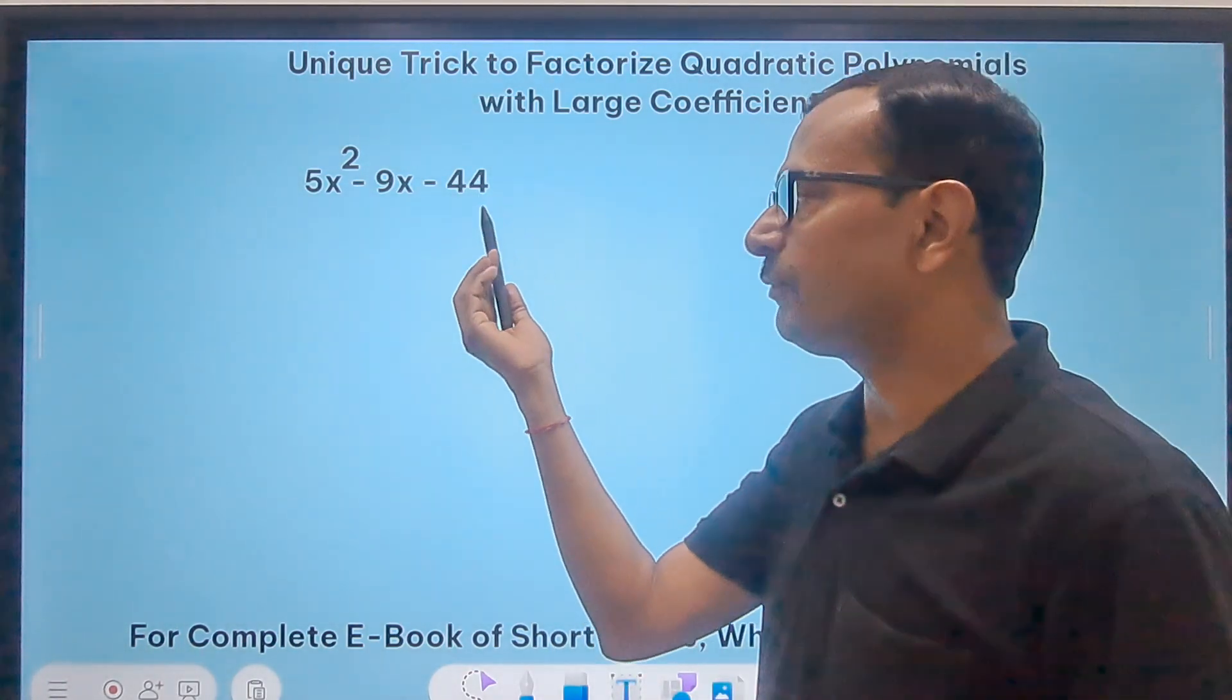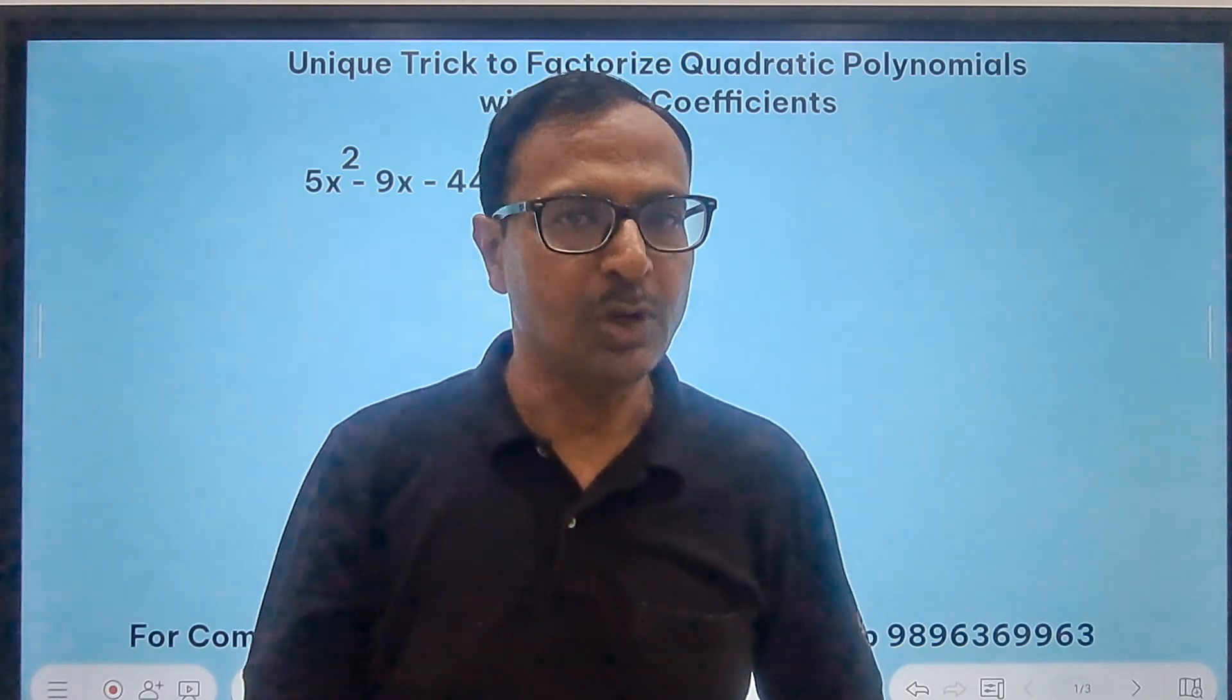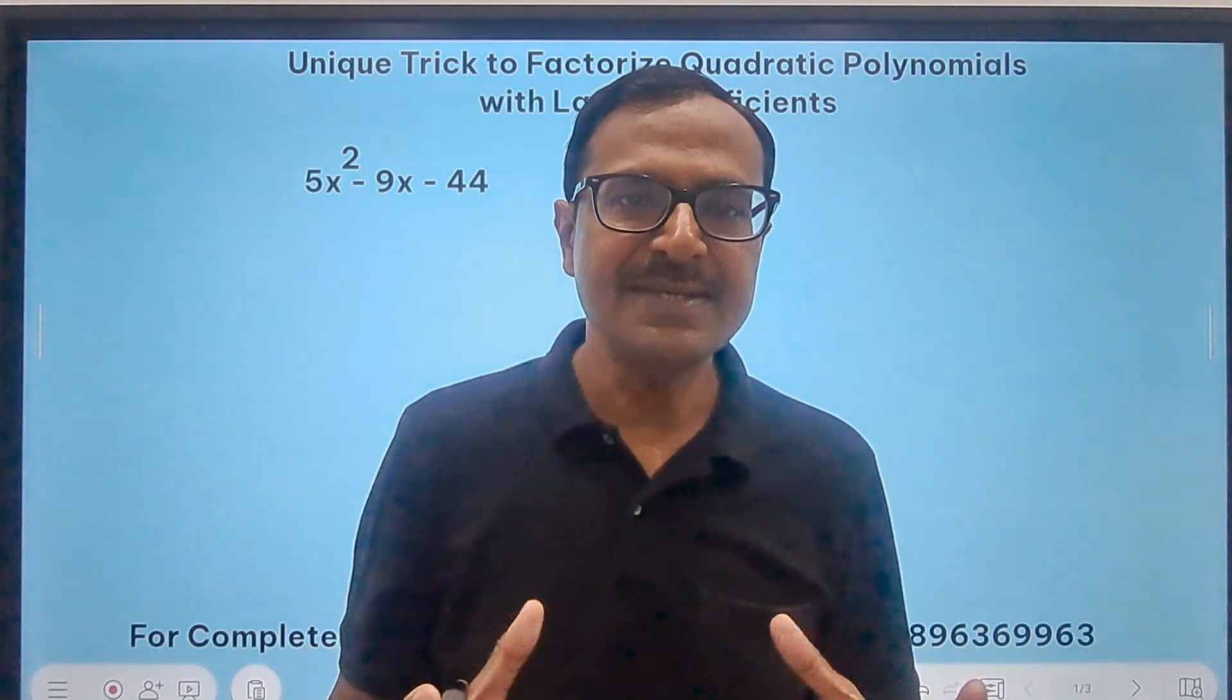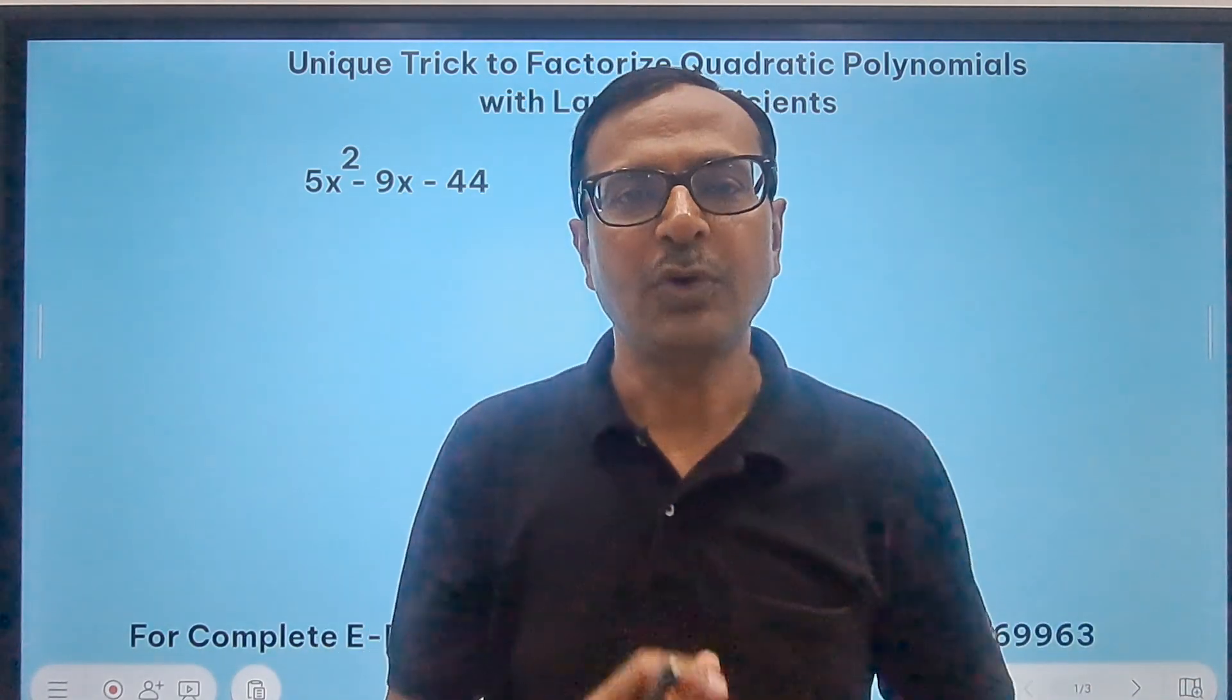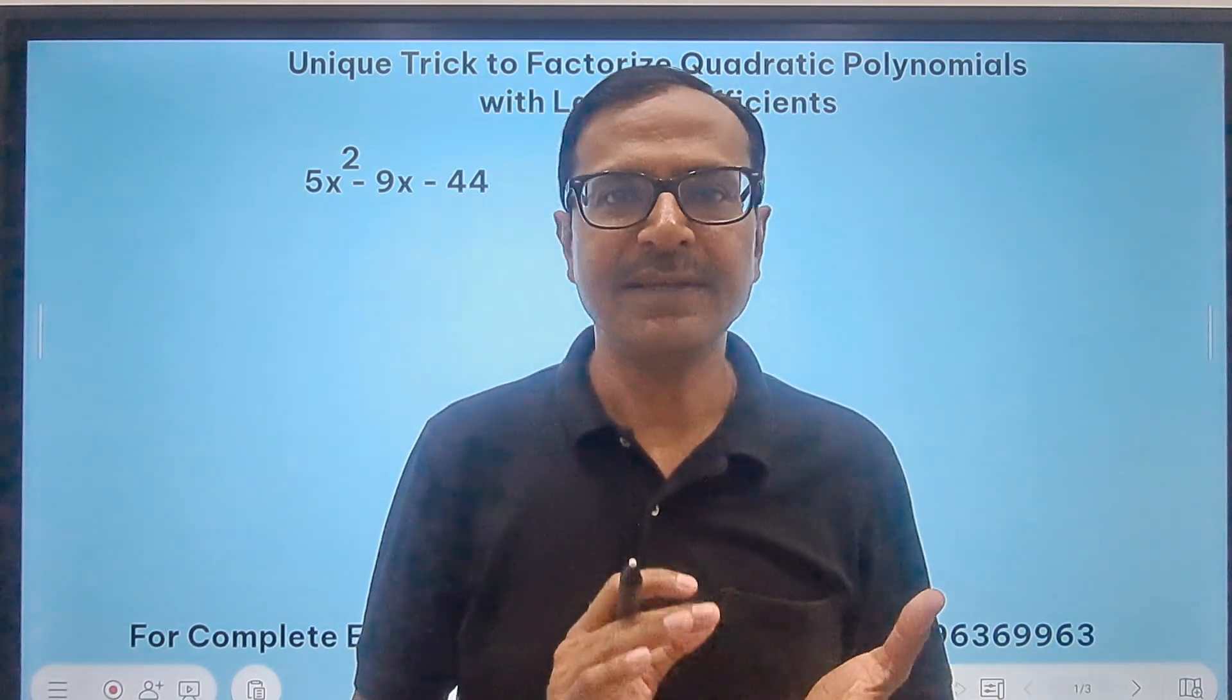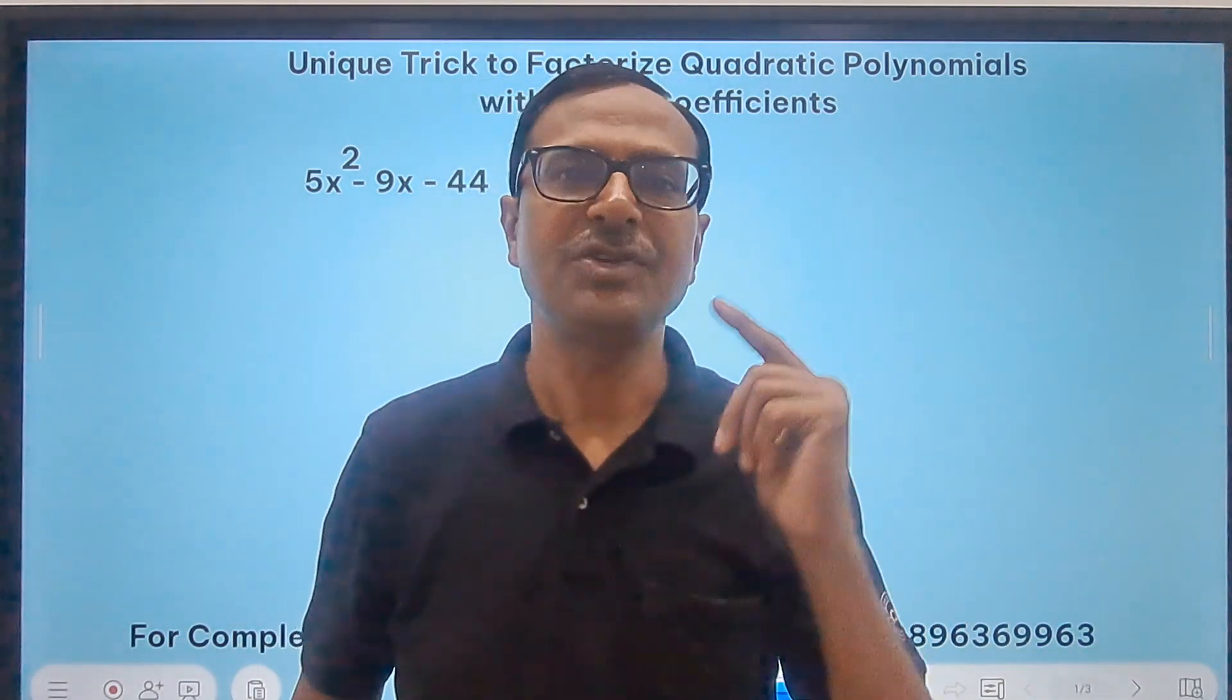Here you can see there is a 44 also, and in subsequent questions I will be taking two digit coefficients and even three digit coefficients. You will see how a little smart work will help you in factorizing all these polynomials very accurately and in less amount of time. Very helpful for all school students studying in class 8th, 9th, 10th level, and cracking multiple choice questions will be really easy if you follow this trick.